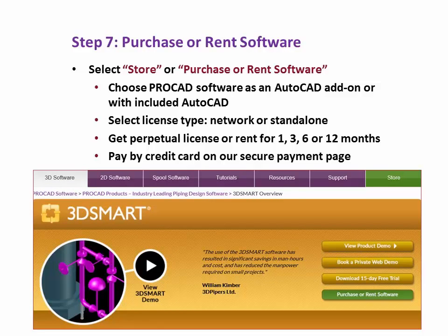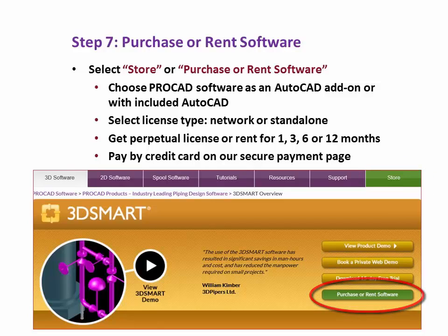Step 7: Purchase or rent software. Select Store or Purchase or Rent Software. Choose ProCAD Software as an AutoCAD add-on or with included AutoCAD. Select license type — network or standalone. Get a perpetual license or rent for 1, 3, 6, or 12 months. Pay by credit card on our secure payment page.